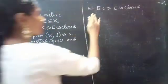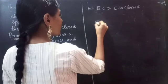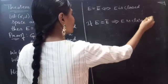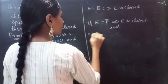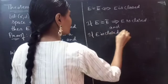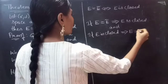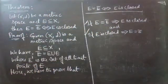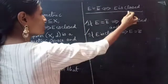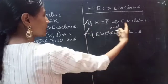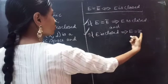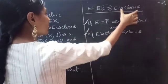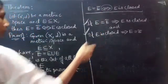To prove this — E equals E-bar if and only if E is closed — we will prove two directions. It is sufficient to prove: if E equals E-bar then E is closed, and if E is closed then E equals E-bar. If and only if means this will happen if this happens, or this will happen if this happens. That is what we are going to prove in two cases.